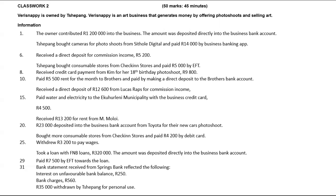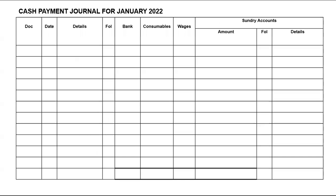The next transaction: Stephan bought cameras from Setole Digital and paid. Whenever we pay, that transaction will be recorded in the cash payments journal. You will write BS, it happened on the first, we paid Setole Digital — it goes under bank as well as equipment, which is sundry.